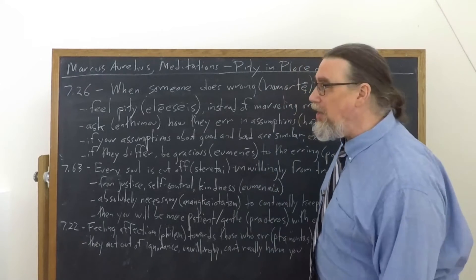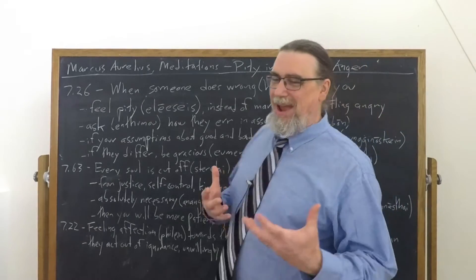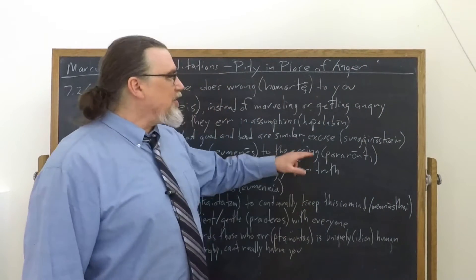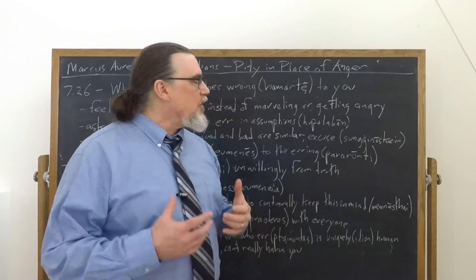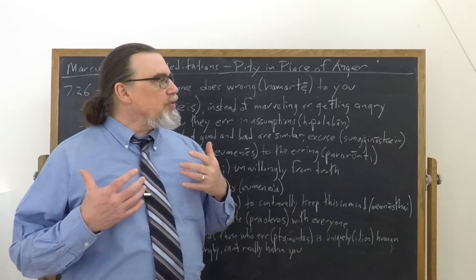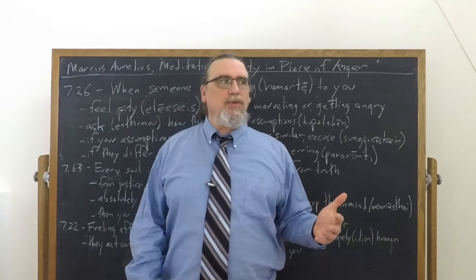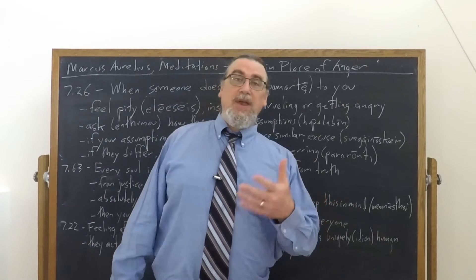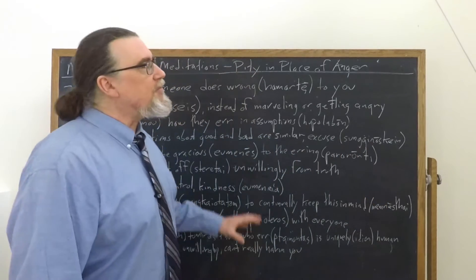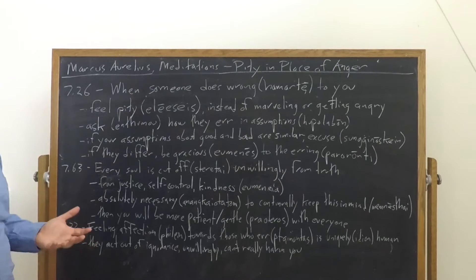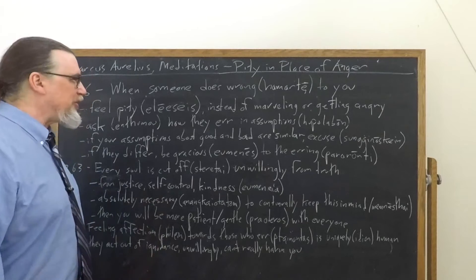If that's the case, well, then you should actually excuse them. Because they're just doing the same thing that you're doing. And the word here is quite interesting. So gignoskain, which we get the word sungnome from, and sungnomes, which has a sense not just of excusing, but even forgiving. Being willing to let things slide. If they've got the same screwed up assumptions that we do, why are we actually complaining about that? Maybe we should spend more time fixing ourselves.